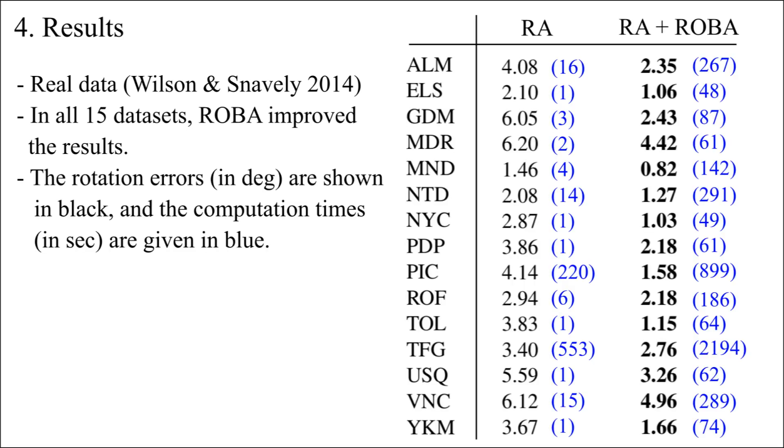This table gives some of the numbers. The rotation errors in degrees are shown in black, and the computation times in seconds are shown in blue. Notice that in some datasets, we achieve two to three degrees of average error reduction.